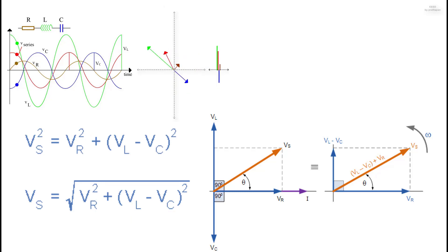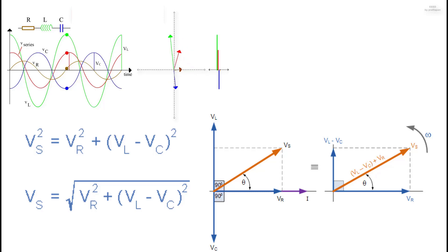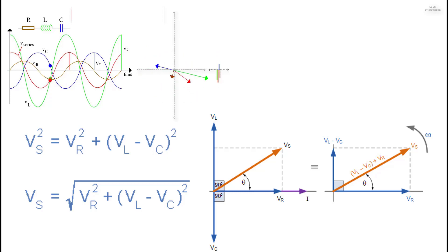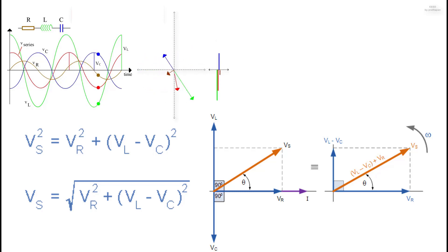When using the voltage equation, the final reactive voltage must always be positive in value — the smallest voltage must always be subtracted from the largest. We cannot have a negative voltage added to VR, so it is correct to have (VL − VC) or (VC − VL), taking the smallest value from the largest; otherwise the calculation of VS will be incorrect.